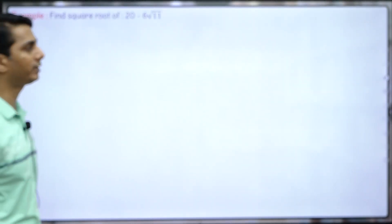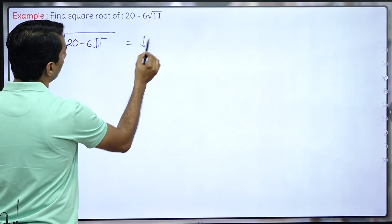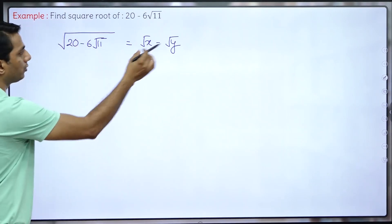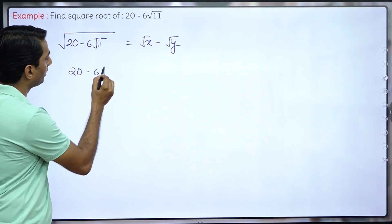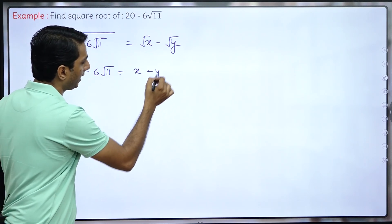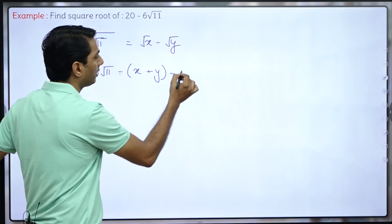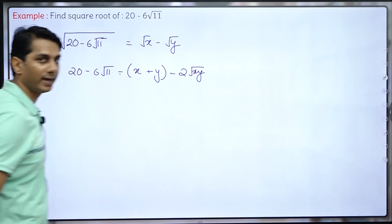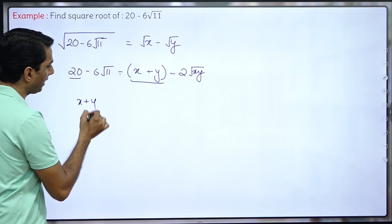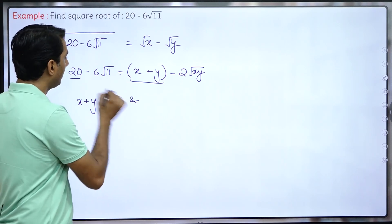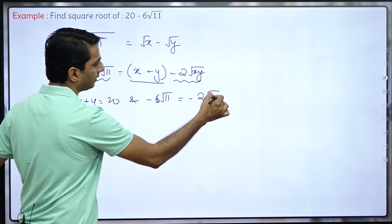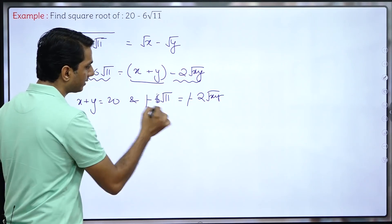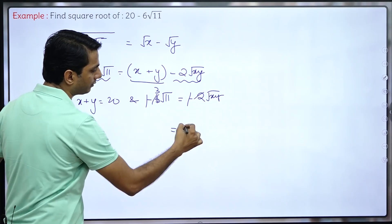Now: √(20 - 6√11). Since there's a minus, the square root will be of the form √x - √y. Squaring both sides: 20 - 6√11 = x + y - 2√(xy). Comparing rational parts: x + y = 20. Comparing irrational parts: 2√(xy) = 6√11, so √(xy) = 3√11, and squaring: xy = 9 × 11 = 99.